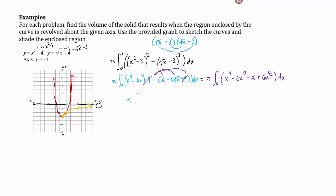So we have to add a power and divide. So pi times x to the fifth over 5 minus 6x cubed over 3 minus x squared over 2 plus, now this is the tricky one because it's a fraction. When I add one I'm really going to add it as a common denominator of 2 over 2. So we get 6x to the three halves but we need to divide by the three halves and we're going to plug in one and zero.